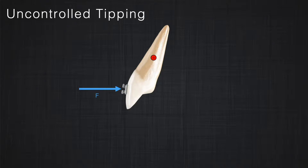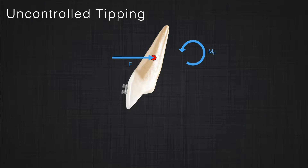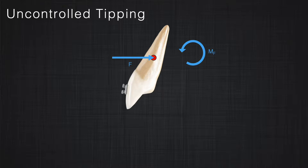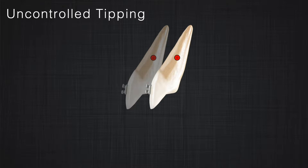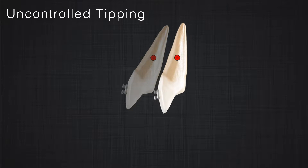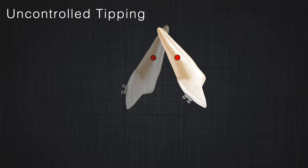Let's look at different examples. Assume we apply a force F at a distance d from the center of resistance. The equivalent system would be a force at the level of the center of resistance and a moment in the system that will tend to rotate the tooth. The force provides displacement along the line of action, and the moment provides rotation. Superimposing these two movements produces uncontrolled tipping, where the center of rotation is between the apex and center of resistance — the apex goes one direction and the crown goes another.